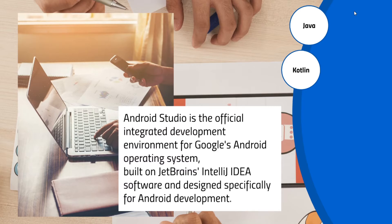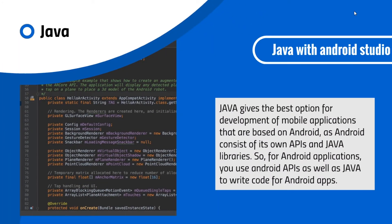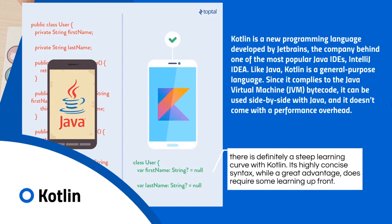Using Android Studio you can only develop Android apps, and there are two programming languages for that: Java and Kotlin. Java is arguably the best option because Android's official language is Java, most of its APIs are developed using Java, and Java provides really high performance and fast loading. However, Java code can be quite lengthy and difficult, and solving errors can be a tedious task.